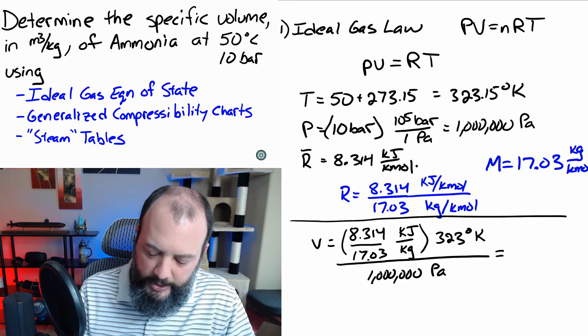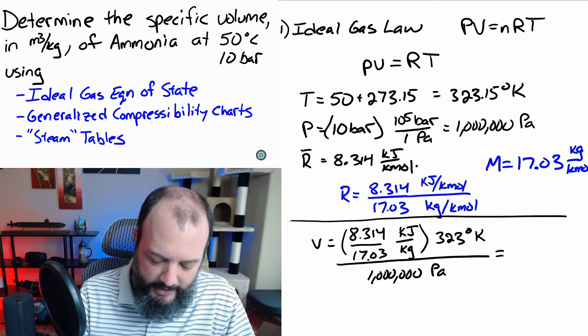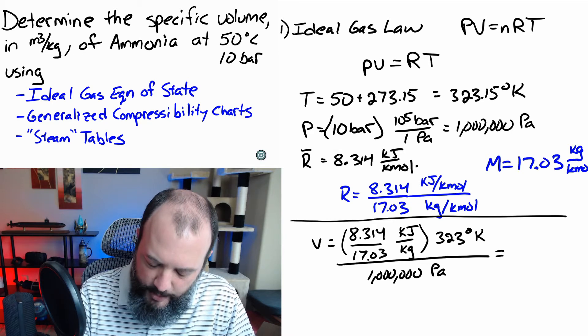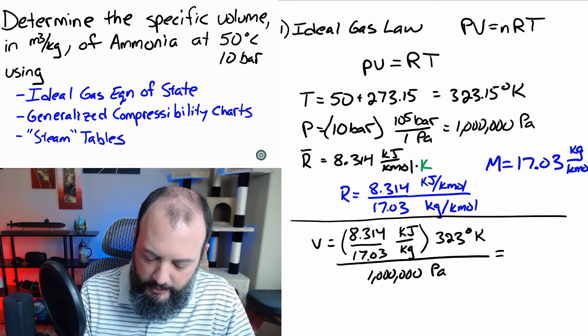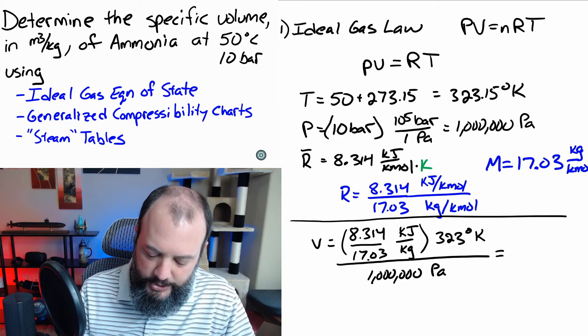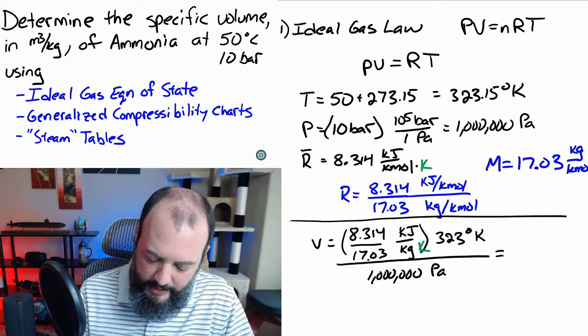That's the easiest way to make a mistake on an ideal gas equation of state problem is to have the wrong units. And as I start to compare units at this point, I already see right away that that Kelvin is not going to cancel. Of course, that means I made a mistake back earlier when I wrote down R. There actually should have been a Kelvin down in the denominator, which should put an extra Kelvin right there.